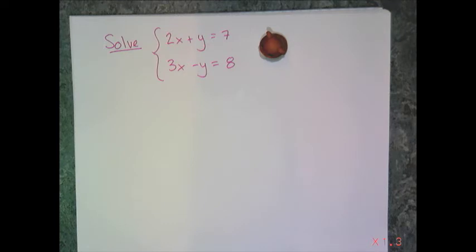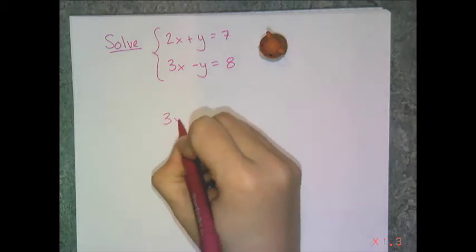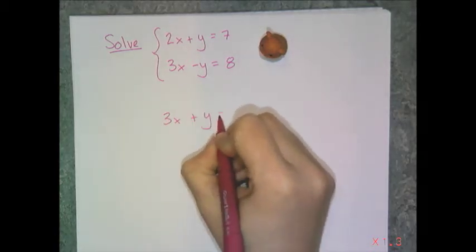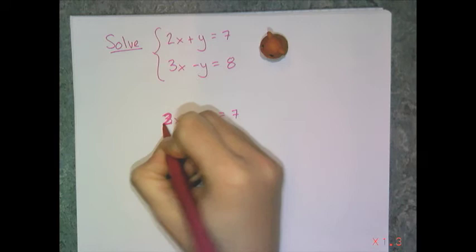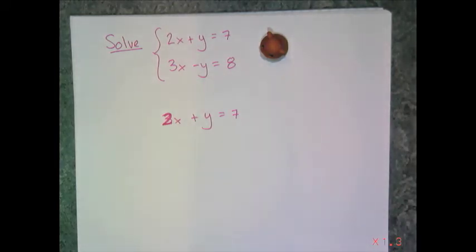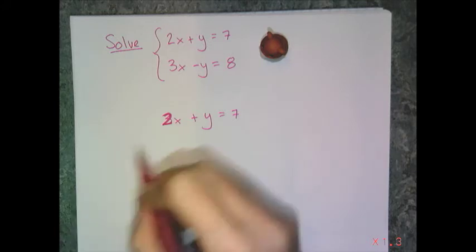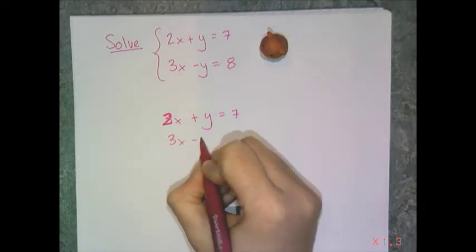I'm going to use this example. This example is what I like to call elimination ready, meaning I don't have to manipulate any of the equations — I can just add them together. I'm going to start with 2x plus y equals 7, the first equation. And I want to add something to both sides. On the left side, I'm going to add 3x minus y.